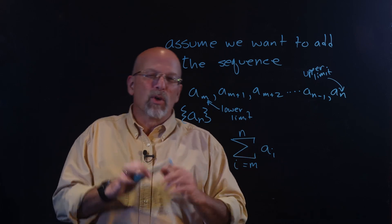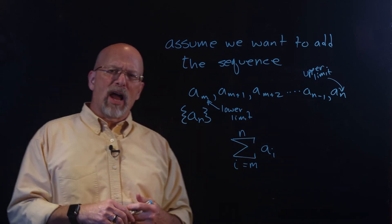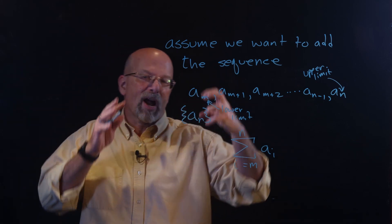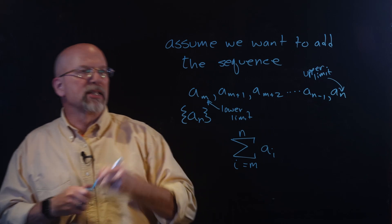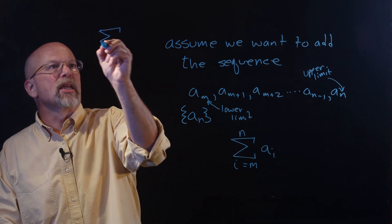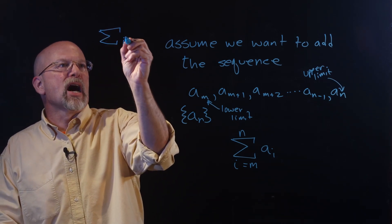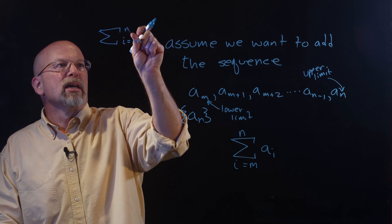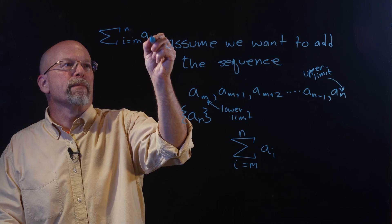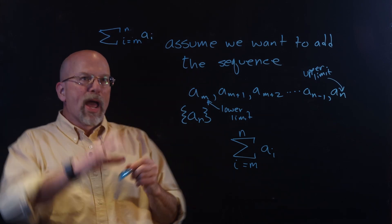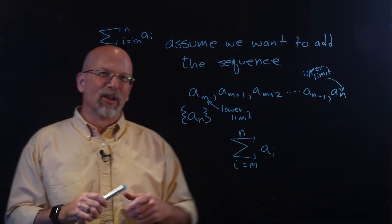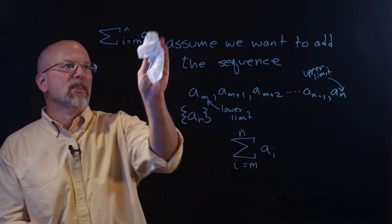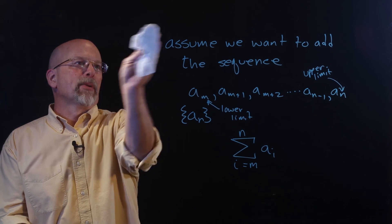Sometimes what you may see, especially in a lot of word processing programs or presentation software where they're trying to reduce the amount of vertical space, you may see this represented with a sigma and then the i equals m to n written to the side of it — so things get squashed down a little bit to have more room. In general, with what I'm going to be writing, you'll see it in the standard format. So let's do a couple of examples.